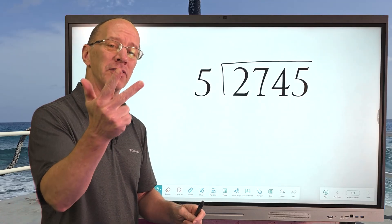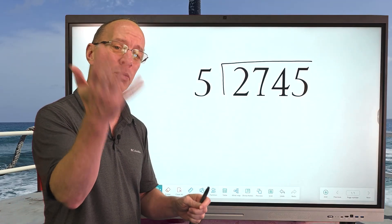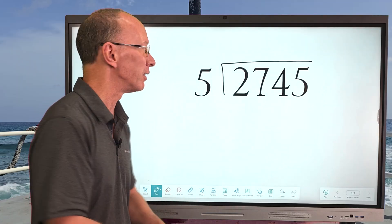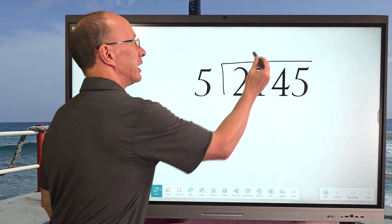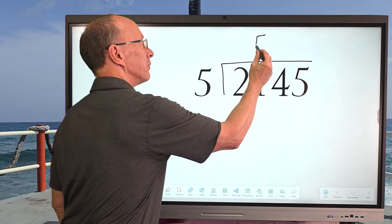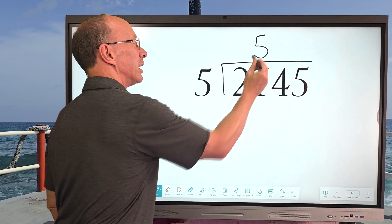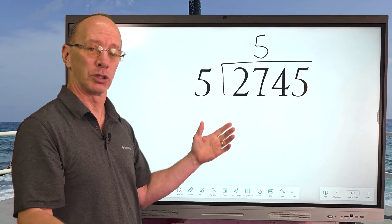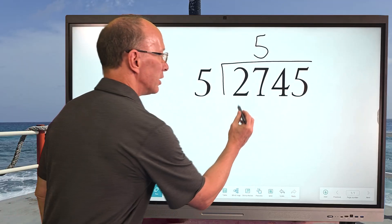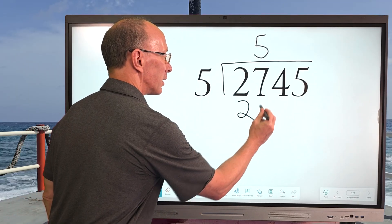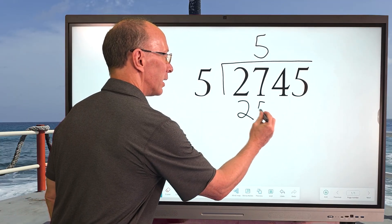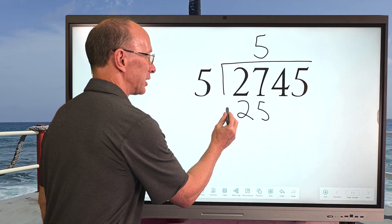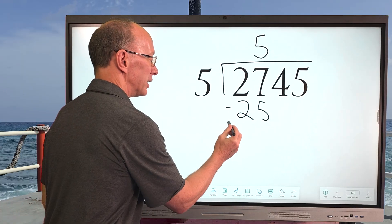How many times can I put five into 27? Let me see: 5, 10, 15, 20, 25 — 30 is too much. We're going to do 5 times 5, so I'm going to go ahead and write the 5 right here. Then our next step is to multiply: 5 times 5 equals 25, so I put 25 right here. And then — do you know what the next step is? It is subtraction!